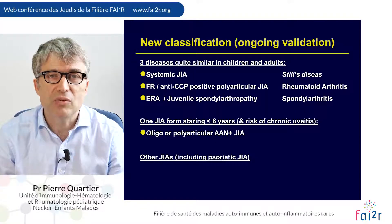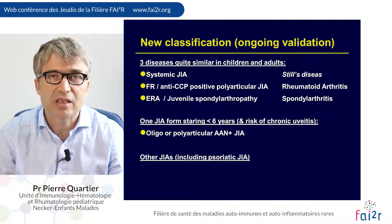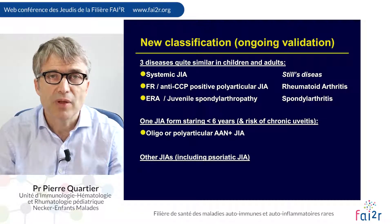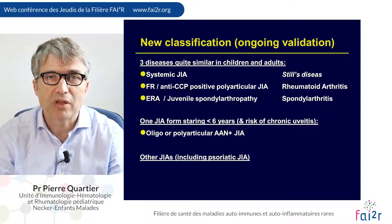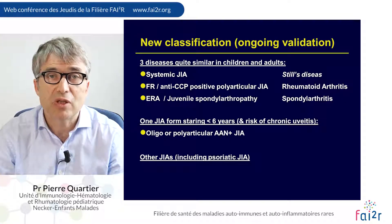The four groups are: systemic JIA which is Steele's disease; rheumatoid factor positive and CCP positive polyarticular JIA like rheumatoid arthritis; spondyloarthritis in children; and a group of diseases that start in early childhood with ANA positivity, oligo or polyarticular onset JIA starting before the age of six years with a risk of chronic anterior uveitis.